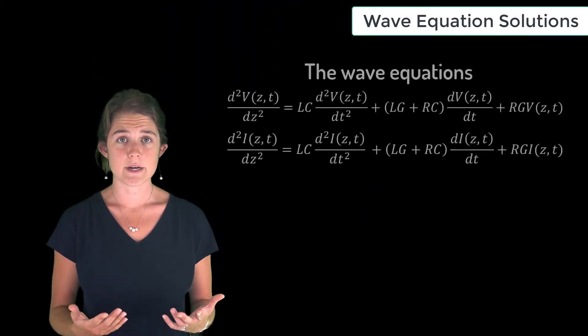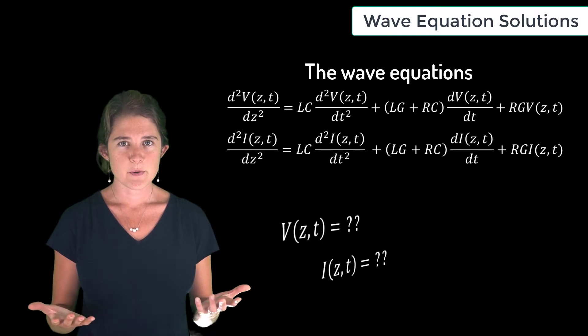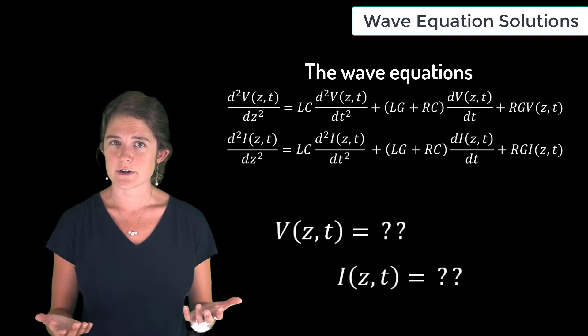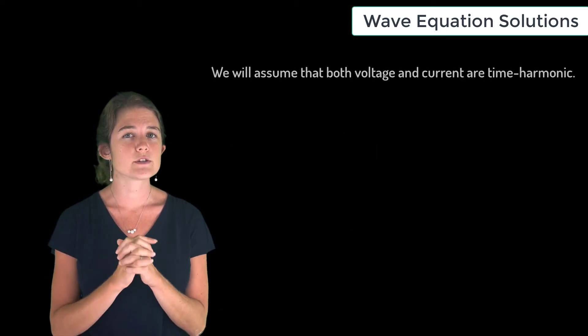Now we have the differential equations that govern current and voltage along the transmission line, but what does it mean? What are the actual solutions for voltage and current? To find these solutions, we will first assume that